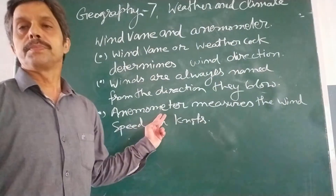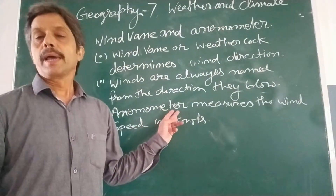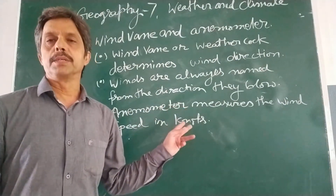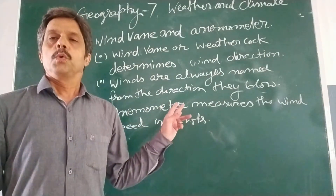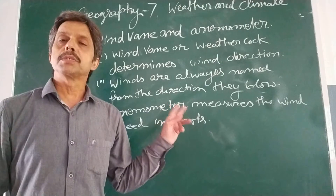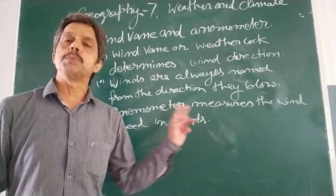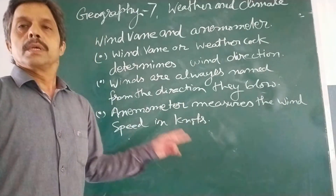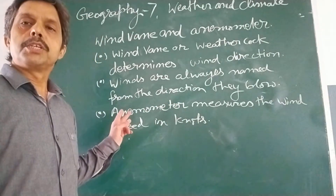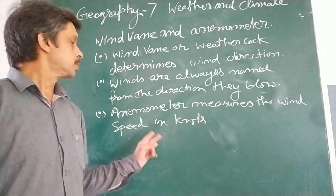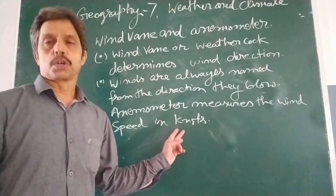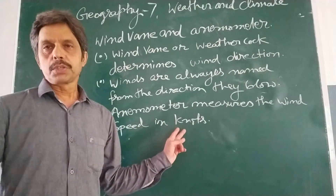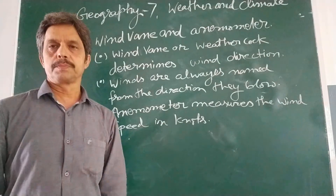Anemometer is the instrument which measures the speed of wind. Wind speed is measured in knots — knot is the unit of wind speed.